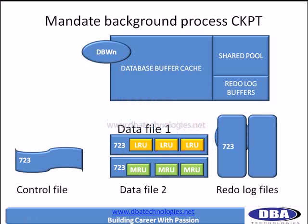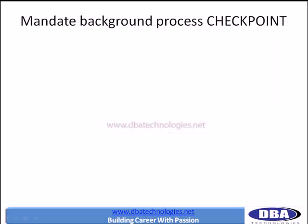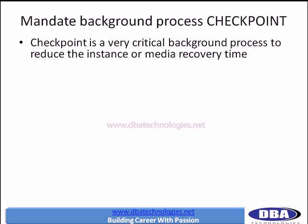Checkpoint also stamps data file headers with the appropriate checkpoint number. The third file updated is redo log files — they are updated to record up to what extent information has been saved from buffer cache to physical files. This means that in case of recovery, recovery must start from the last checkpoint, because up to the last checkpoint the information has been saved from memory to physical files. Checkpoint supports and minimizes recovery time — it is a very critical background process for reducing instance or media recovery time.